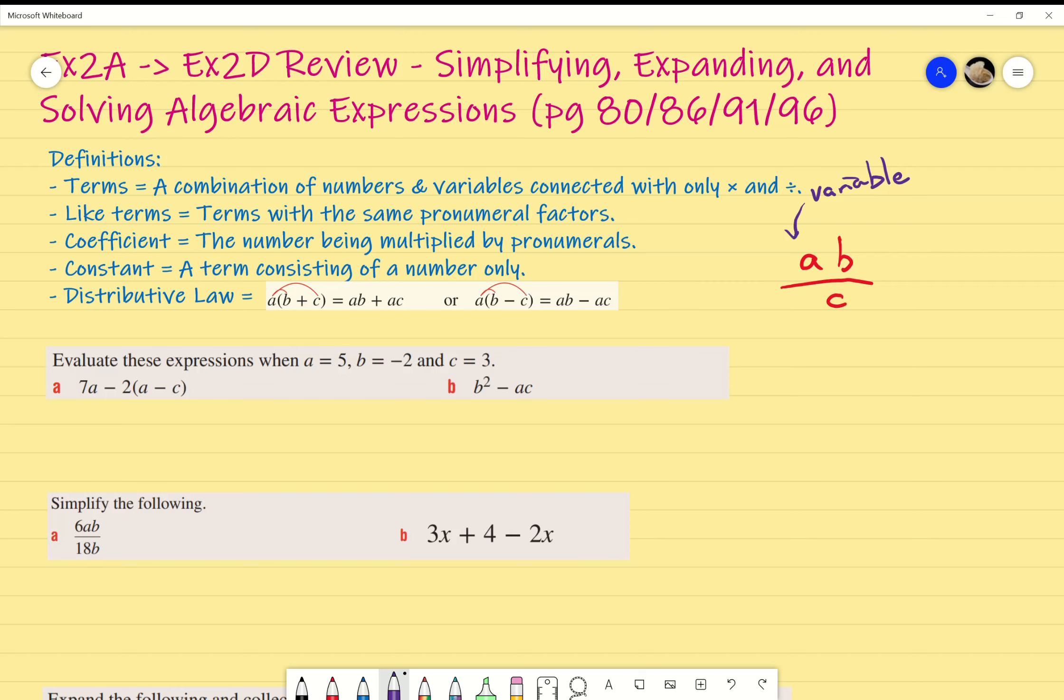Terms generally are separated by pluses or minuses. Like terms are terms with the same pronumeral factors. Just a quick refresher: AB and AB squared are not the same thing. They have to have the same number of those letters. So AB and AB, or AB and BA, are both like terms, but AB and A squared B is different.